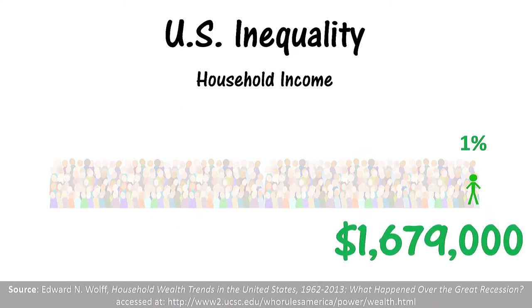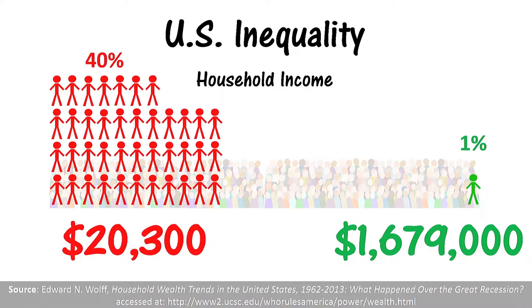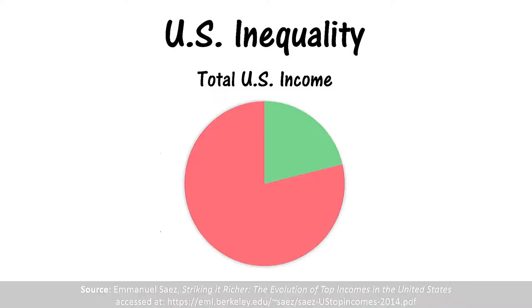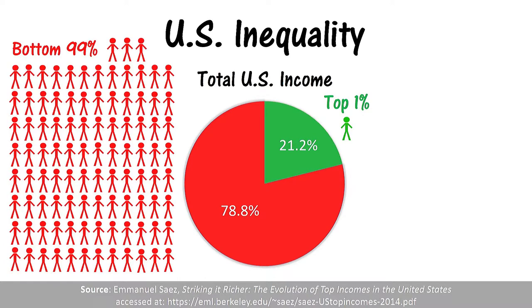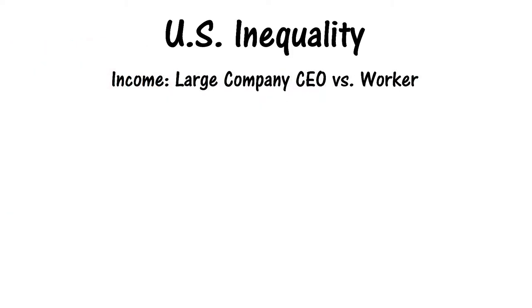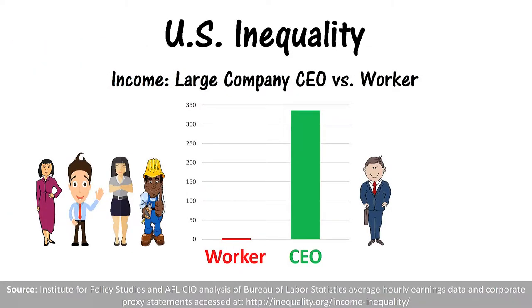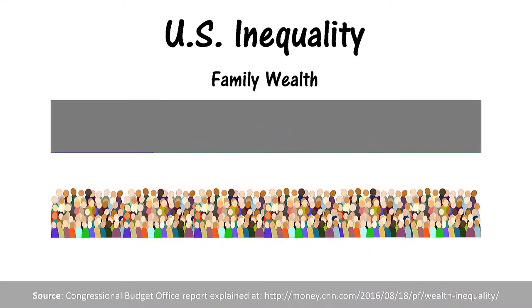Now let's examine inequality within the US, starting with income inequality. In 2013, the top 1% of income earners made an average of nearly $1.7 million, while the bottom 40% earned an average of $20,300. Similarly, a different study found that in 2014 the top 1% accounted for 21.2% of total US income, while the bottom 99% shared 78.8% of income. As of 2015, the CEO of a large US company made 335 times what a worker got paid.